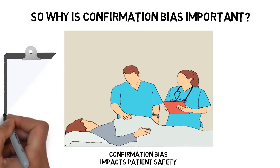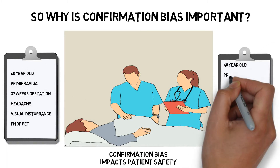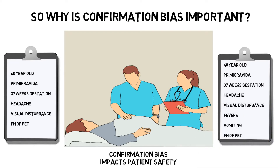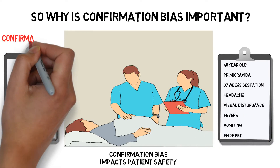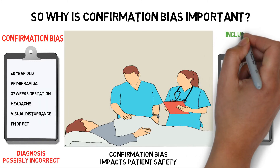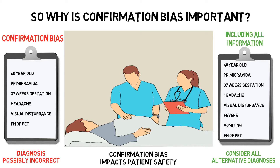Let's use our previous example of the same 40 year old primigravida presenting at 37 weeks gestation with a headache and visual disturbance. By unconsciously disregarding the patient's symptoms of fever and vomiting, we do not think of the alternative diagnosis such as meningitis. Instead, confirmation bias has led us to confirm a diagnosis which is probably incorrect and therefore impact the patient's care and safety.